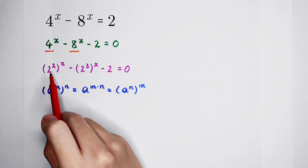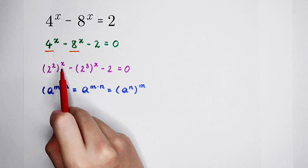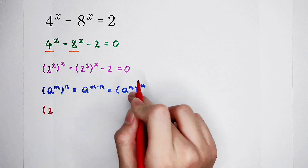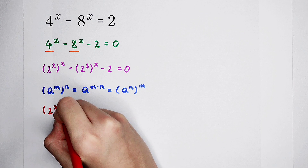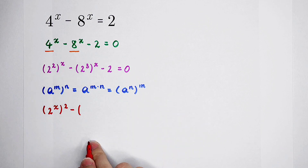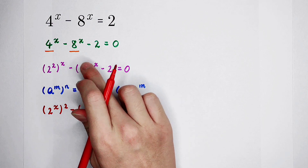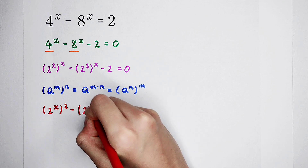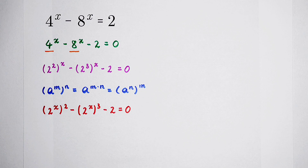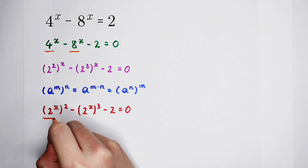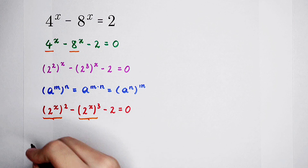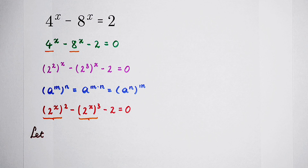So applying this: a is 2, m is the exponent 2 in the base, and n is x. Similarly for the second term, a is 2, n is x, and then a to the power of 3. So we get 2 to the power of x, quantity squared, minus 2 to the power of x, quantity cubed, minus 2 equals 0. These two expressions share the same base 2 to the power of x, so we can substitute it.